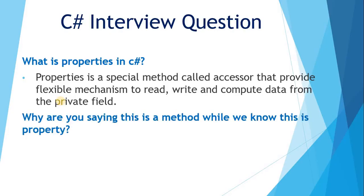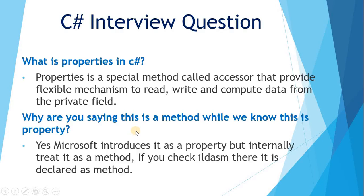Next question — what actually happens in an interview? When you answer a question, the interviewer picks the next question from your answer. So here, we said property is a special method called accessor. The interviewer may ask: why are we calling this a method when we know it's a property? The answer is: yes, Microsoft introduces it as a property, but internally it treats it as a method. If you check ILDASM, it is declared as a method.